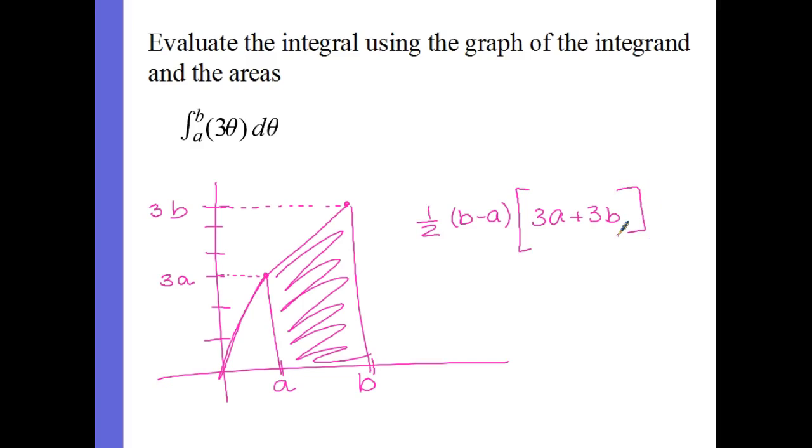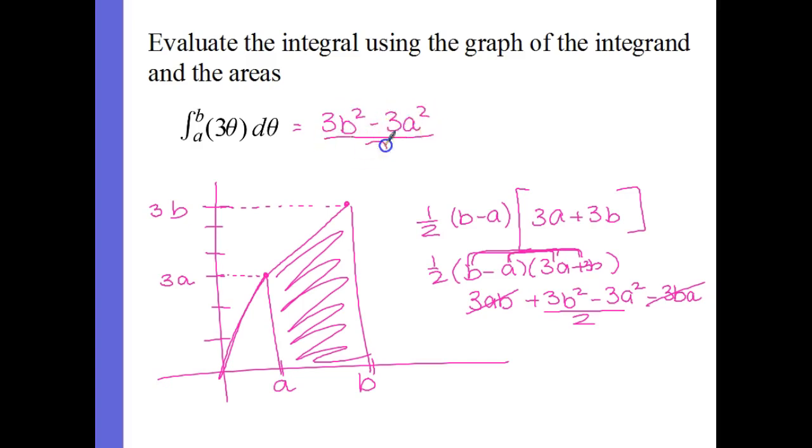Can't really clean that up a whole lot. You could foil it and get squares. So you get 3AB plus 3B squared minus 3A squared minus 3AB. So the 3AB terms cancel, and then divide it by 2.